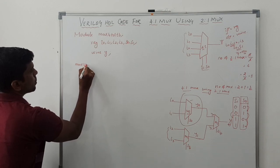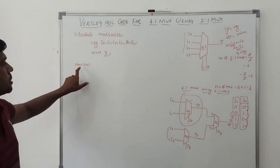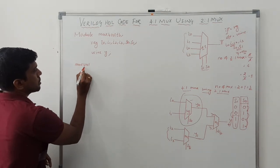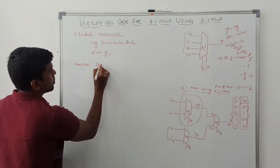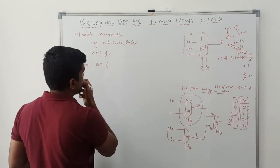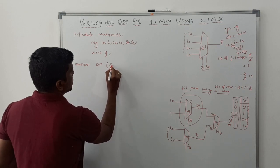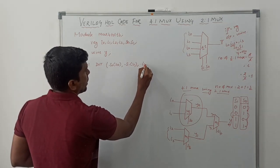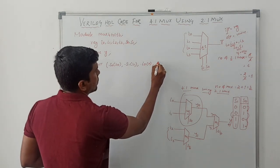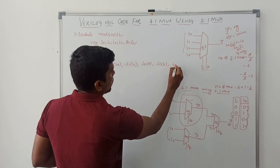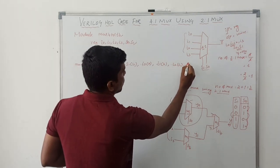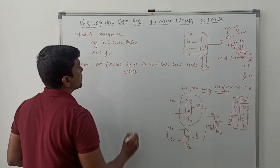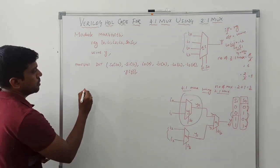Next is the declaration of instantiations. The module name is mux4to1 — this is the module name used when writing the Verilog HDL code, and that name is reflected here. So: mux4to1 dut — device under test. The port connections are: .s0(s0), .s1(s1), .i0(a), .i1(b), .i2(c), .i3(d), .y(y). This is the instantiation declaration.